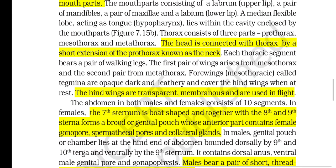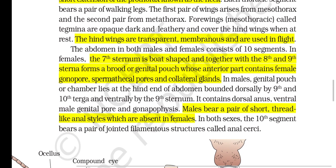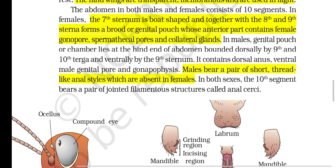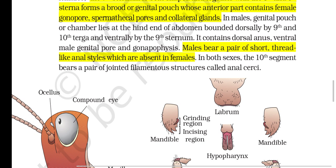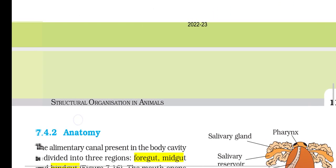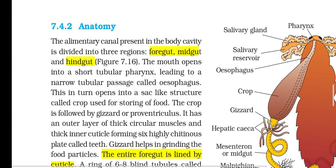The forewings (tegmina) from the mesothorax are opaque, dark and leathery, covering the hind wings at rest. The hind wings are transparent, membranous and are used in flight. The abdomen in both males and females consists of 10 segments. In females, the 7th sternum is boat-shaped and together with the 8th and 9th sternites forms a brood or genital pouch whose anterior part contains the female gonopore, spermathecal pores and collateral glands. In males, the genital pouch at the hind end of the abdomen contains the dorsal anus, ventral male genital pore and gonapophyses. Males bear a pair of short thread-like anal styles, which are absent in females. In both sexes, the 10th segment bears a pair of jointed filamentous anal cerci.